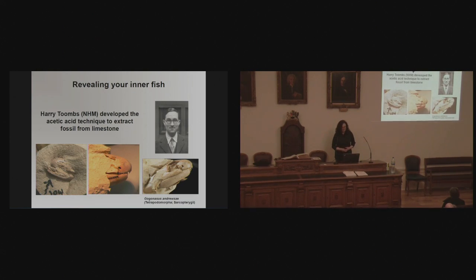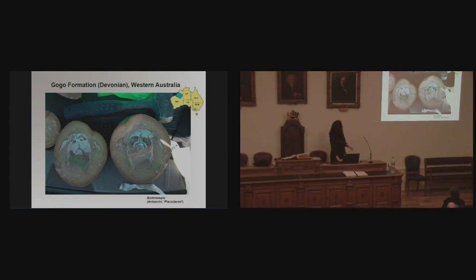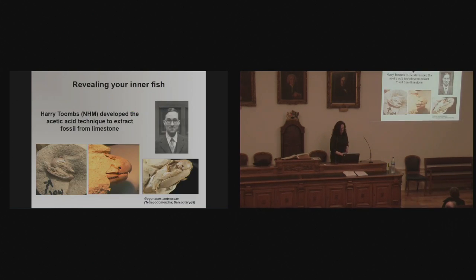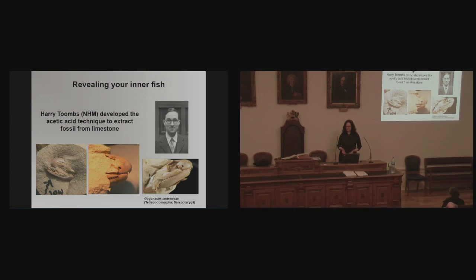How to study these fish? It would be very difficult to study a fossil broken like that with standard paleontological methods, like using a pin or needle to pick the rock away. It was Harry Toombs, a curator of fossil fish at the Natural History Museum, who went to Australia, saw these limestone nodules, and realized the best way to prepare these fossils would be to glue them back together, take them to the lab, and stick them in acetic acid — strong vinegar — because the acetic acid breaks down the limestone leaving the bone behind.